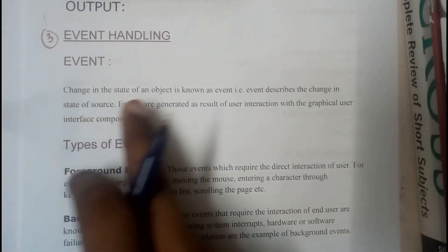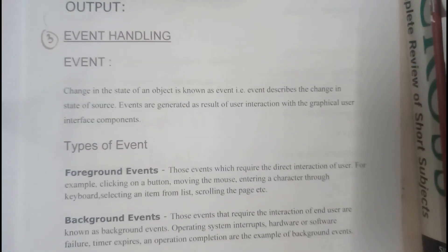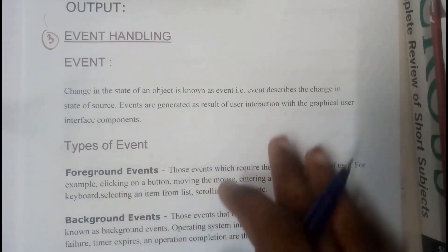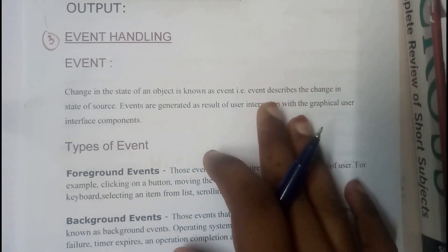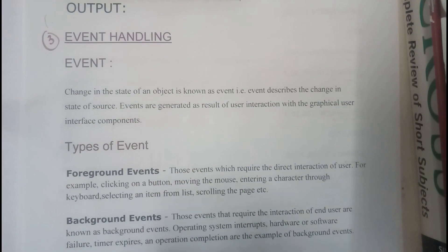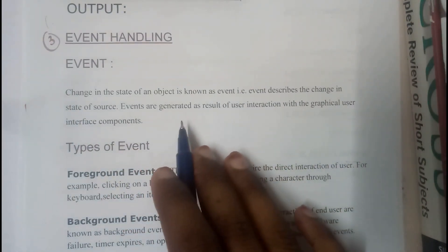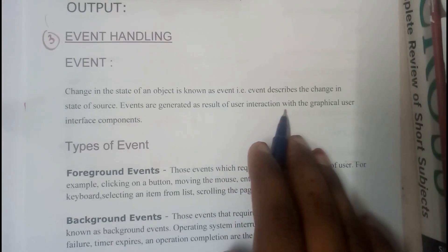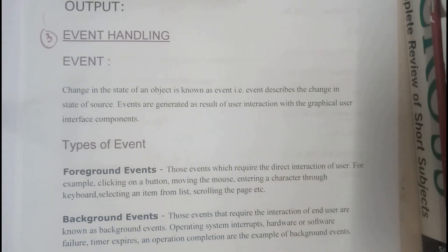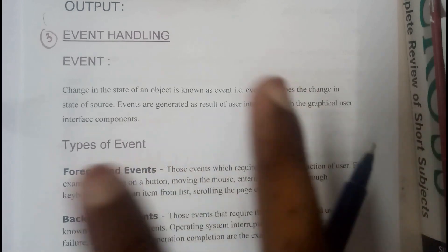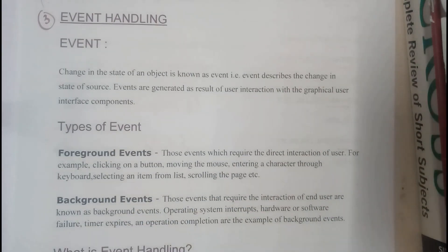Change in the state of an object is known as event. The event describes the change in the state of source. Events are generated as a result of user interaction with the graphical user interface components. Basically, events are two different event types.